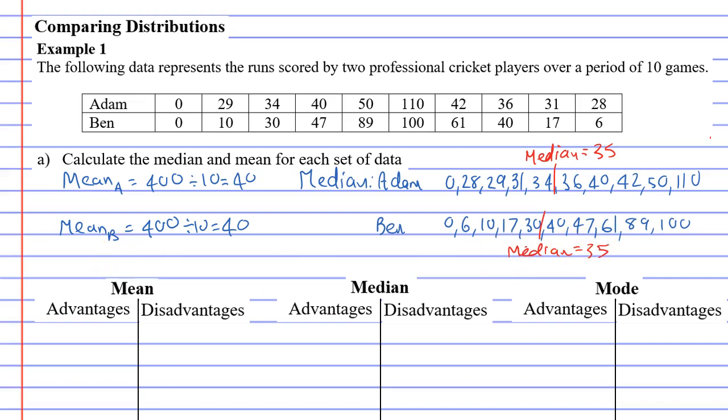Let's talk about the advantages and disadvantages of each. First of all, the mean I would say is quicker and easier to calculate than the median. The reason being is that the median can take a long time because you have to put them in order. So for the median we'll put a disadvantage which is that it can be long and tedious to calculate.